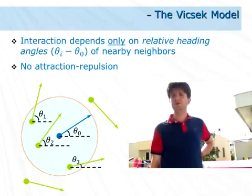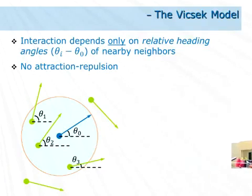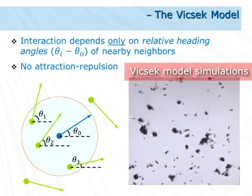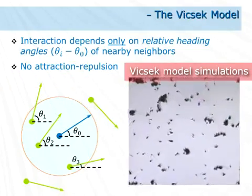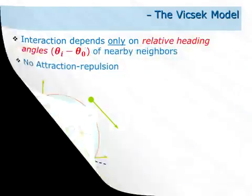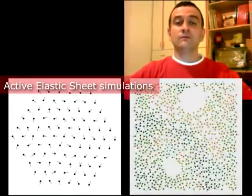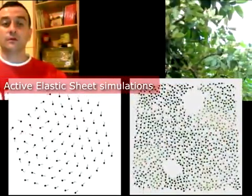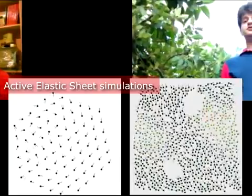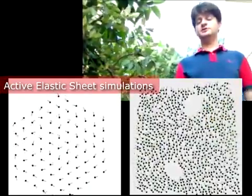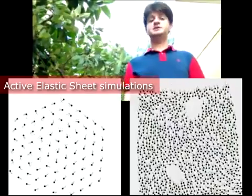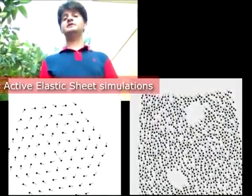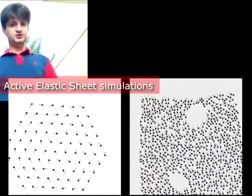The prevailing theories of collective motion have been strongly influenced by the Vicsek model, an extension of the XY model where self-propelled spins advance in their pointing direction, coupled through aligning interactions that depend only on the relative heading angles. In this work, we study the emergence of collective motion in systems with a very different type of interactions. We introduce a simple two-dimensional active elastic sheet model where neighboring agents are connected by linear springs and interact through attraction-repulsion forces that depend only on the relative positions, without any exchange of orientation information.